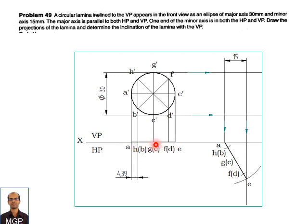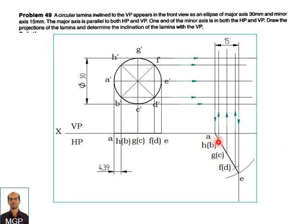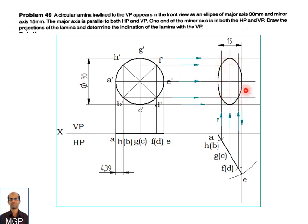Measure distances A to H, A to G, A to F, and A to E, then transfer them. Normally, A to H distance equals E to F — that same distance is 4.39 — and cut the arc. G and C is normally the midpoint of the line, so mark the midpoint here. From this point, draw a vertical projector in reverse, then draw horizontal projectors. At the intersection points, name them: A, B, C, D, E, F, G, H, and construct the ellipse. Join the intersection points with a smooth freehand curve.